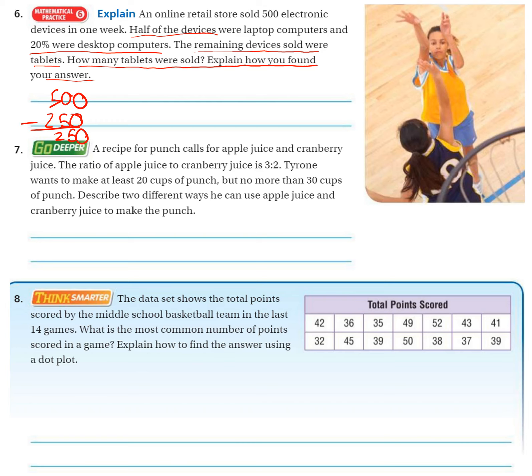20% were desktop. 20% means 20 for every 100, and there's 500. So 20 times 5, which is 100. So now we're left with 150.